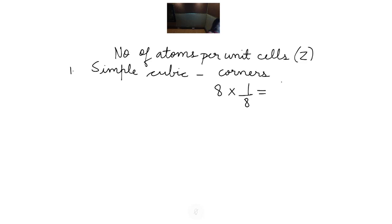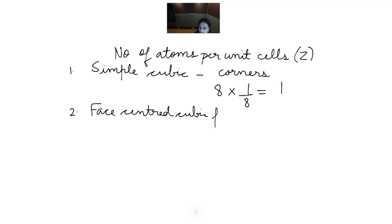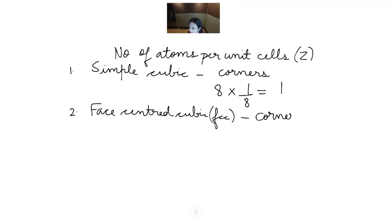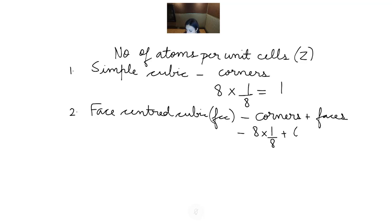Now we calculate for face-centered cubic (FCC). Atoms are present at corners as well as faces. We have 8 corners with contribution 1/8, and 6 faces with contribution 1/2. So Z = 8×(1/8) + 6×(1/2) = 1 + 3 = 4. For simple cubic Z = 1, and for FCC Z = 4.